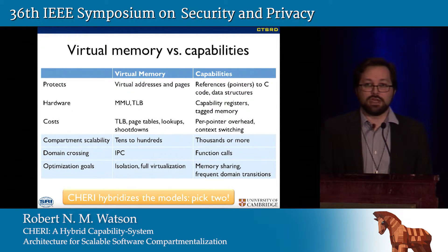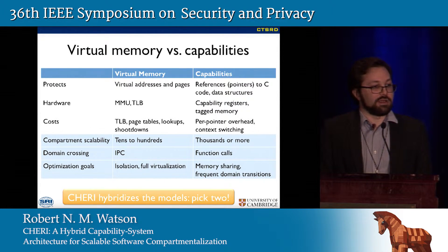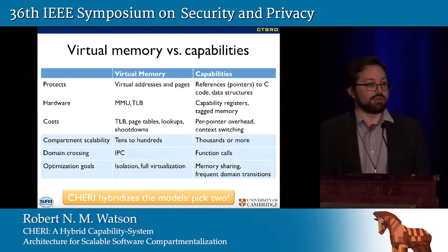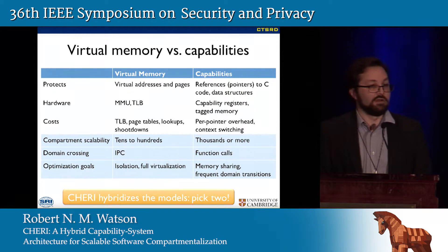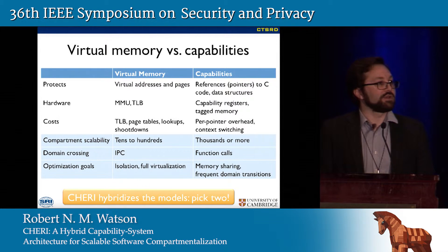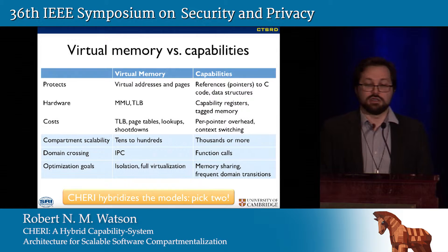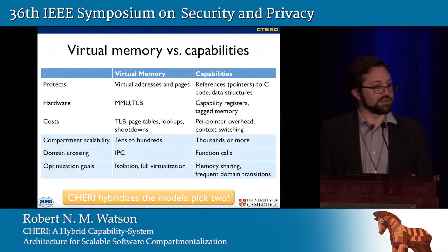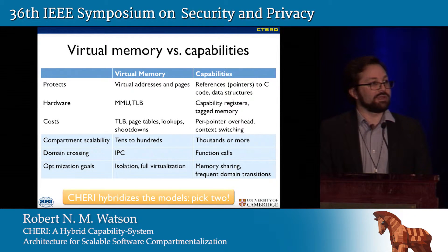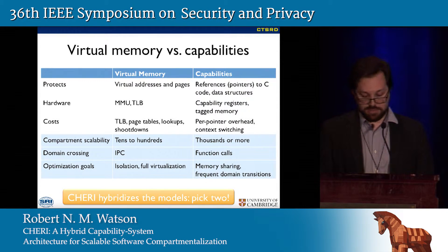With capabilities we can describe C code and data structures, so they are more focused at the internals of an application, whereas paging is focused on overall structure and virtualization. On the hardware side, we retain access to an MMU and a TLB. On the capability side, we have capability registers that gradually displace general-purpose registers as storage for pointers, and we make use of tagged memory at a small but measurable overhead — one bit tag for every 256 bits of memory. On the virtual memory side, there are the often-forgotten costs of the virtual memory subsystem: large page tables, continuous lookups, and on multi-processor systems, inter-processor interrupts to revoke memory on remote processes.